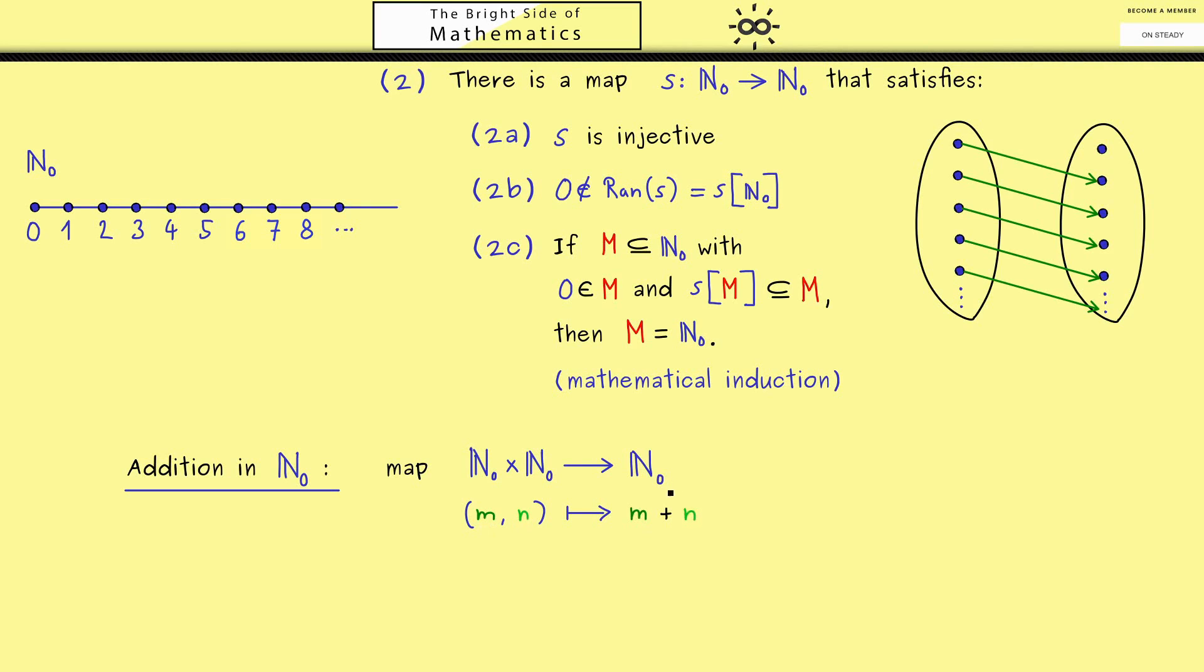The result that comes out, which means the natural number that comes out, we just denote with a plus sign between the two inputs. Of course you already know how to add two natural numbers, but the question here is how is it defined?